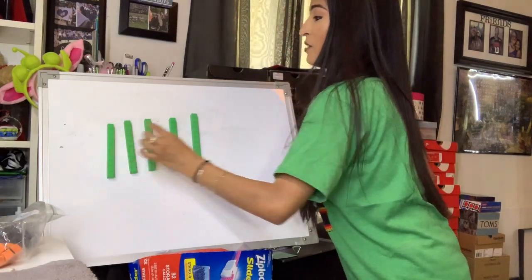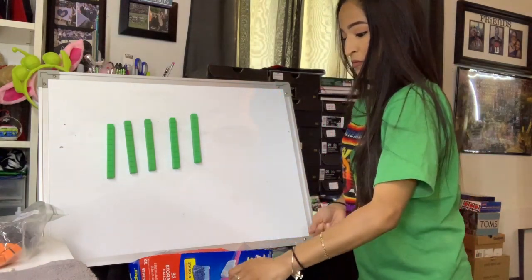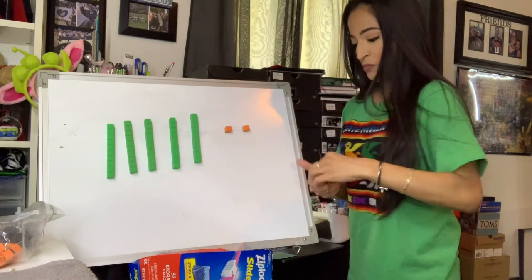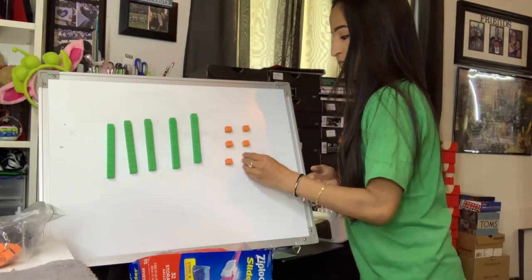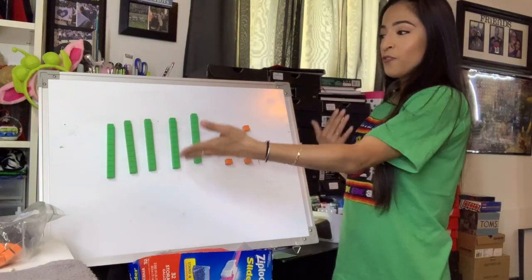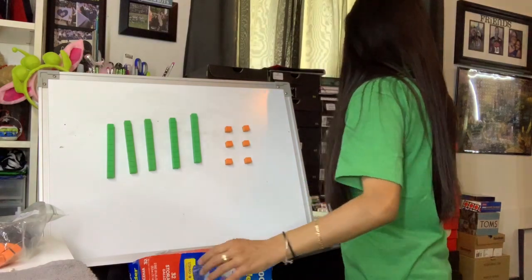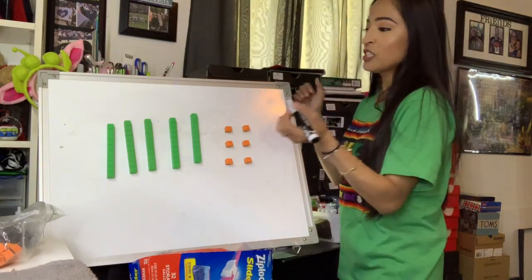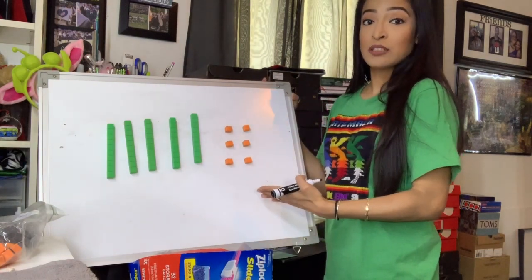So let's say that we have five longs, and then we have six. So we're trying to write the expanded form for this given picture form. What you can do is go ahead and use your strategies of counting what the number is for the longs.